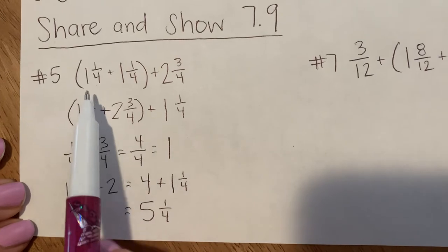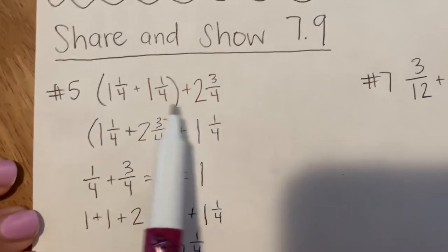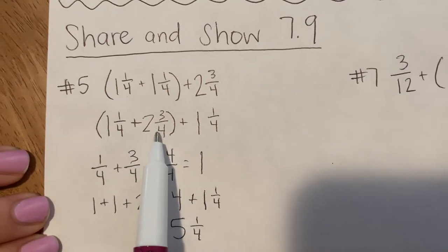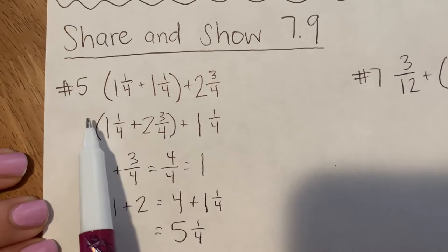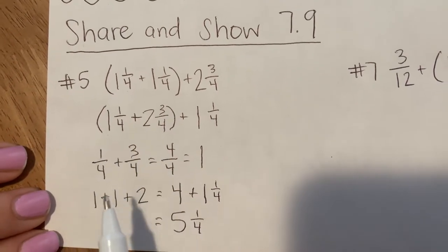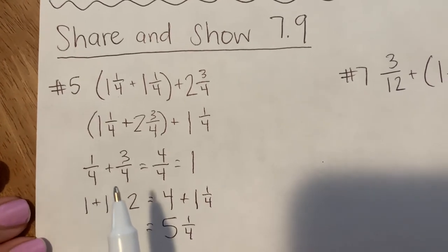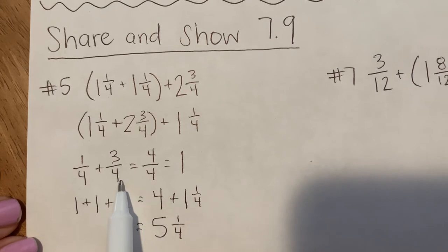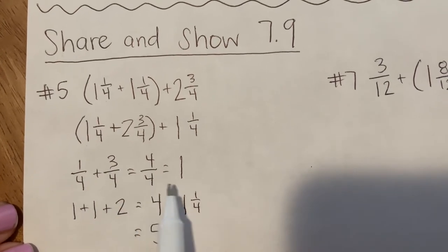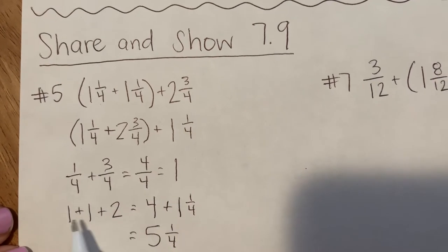Again, I went through, I started with the commutative property so I changed my order and I flip-flopped the 2 and 3 fourths and the 1 and 1 fourth. And then I looked inside my group. I liked the group I had so I didn't have to change anything else. I added my fractions first, 1 fourth plus 3 fourths, that got me 4 fourths which is equal to 1.